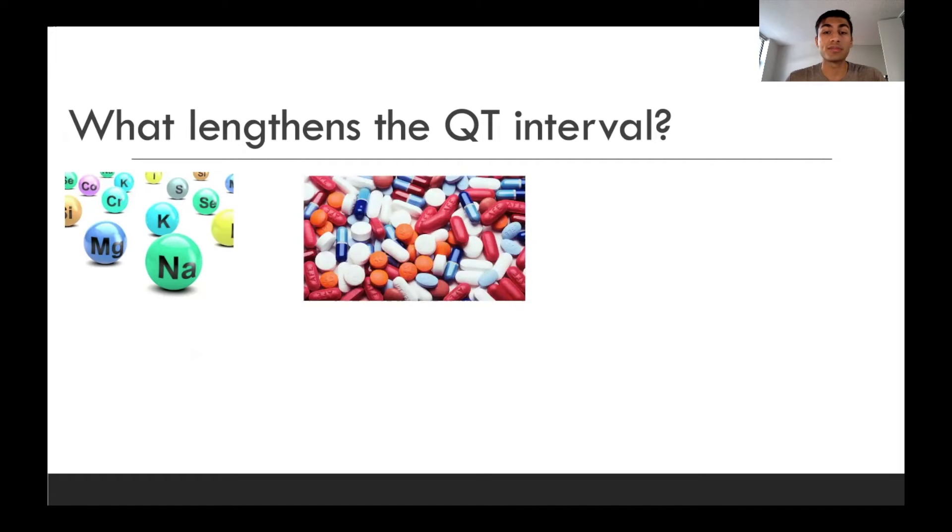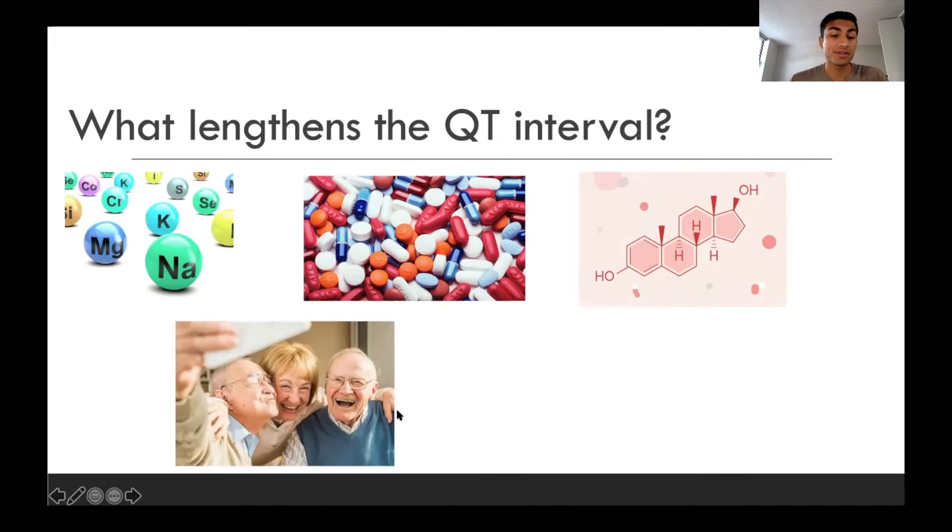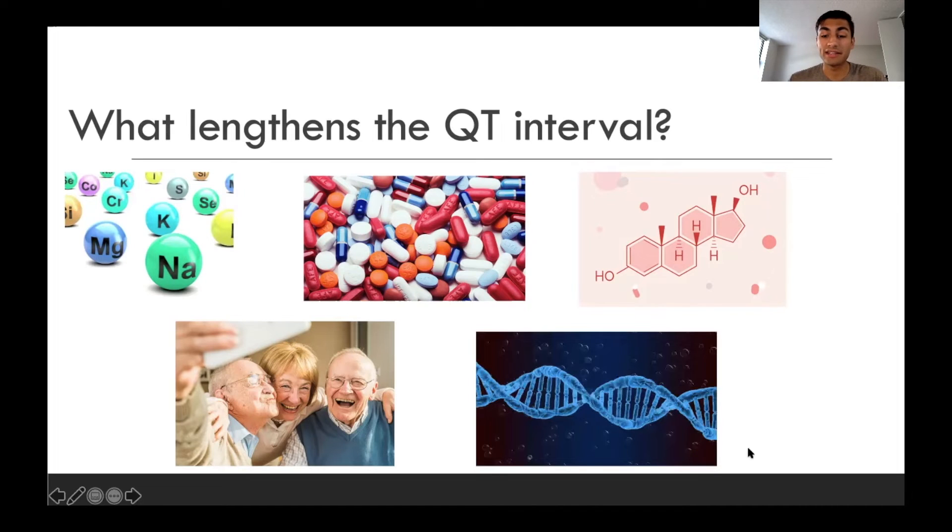The next one is certain medications, in particular, antiarrhythmics and some antimicrobials. Estrogen is another factor, and this is the reason why females have a higher QT interval than males, due to the action of estrogen. The next factor is age. So as we age, the QT interval is going to get a bit longer. And lastly, genetics. So sometimes people are born with a certain genetic variant, and this can predispose an individual to having an increased QT interval.